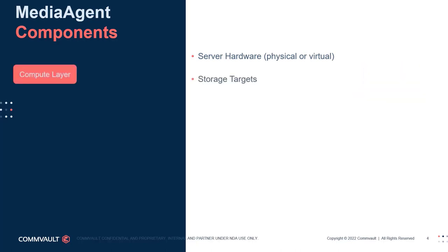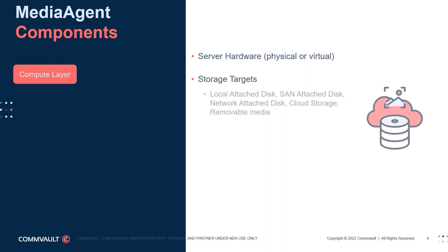The second physical component of a media agent is the storage targets used to hold the various copies of production data. At least one media agent must have write capabilities to copy production data to storage. The storage can be direct-attached, including block storage, network-attached storage, or cloud storage. Storage targets can also be removable media like tape or cloud migration devices — for example, Amazon Snowball Storage.